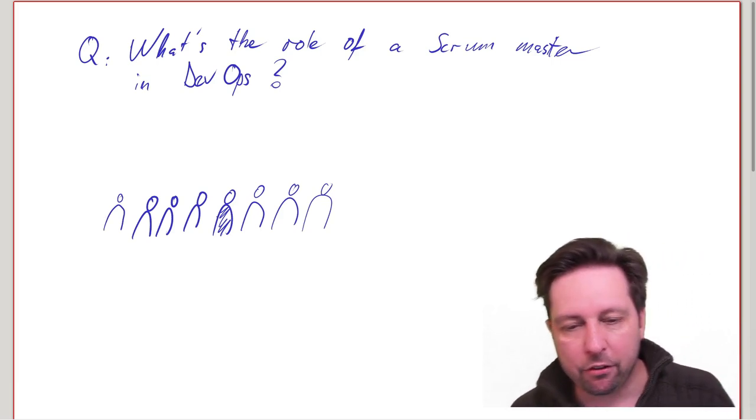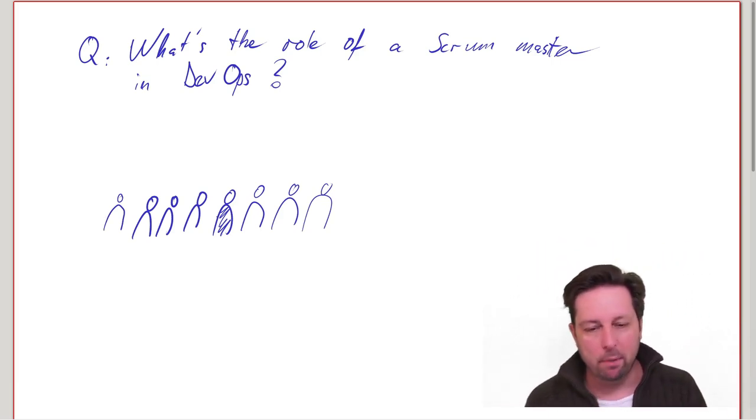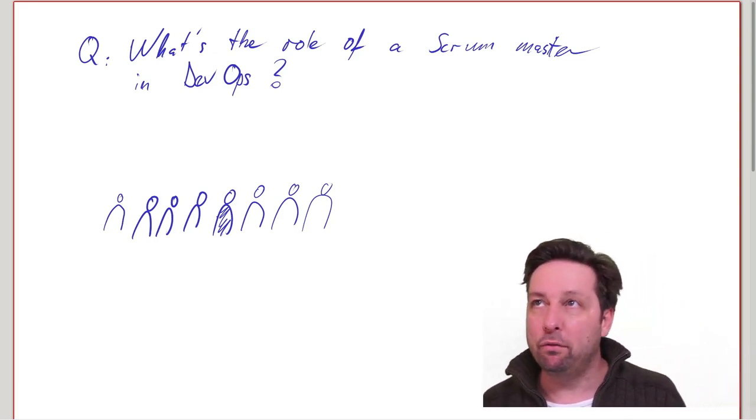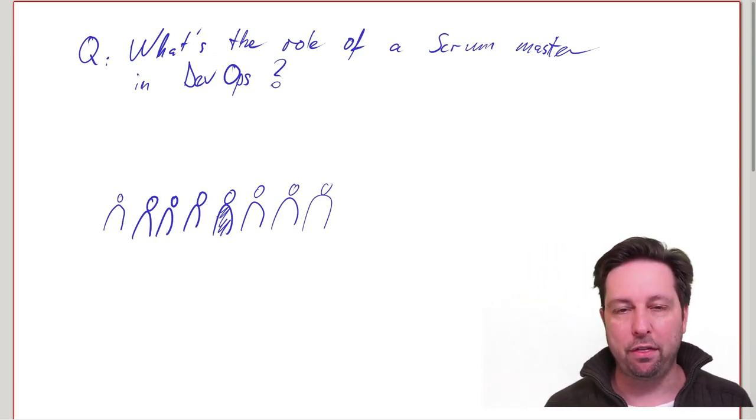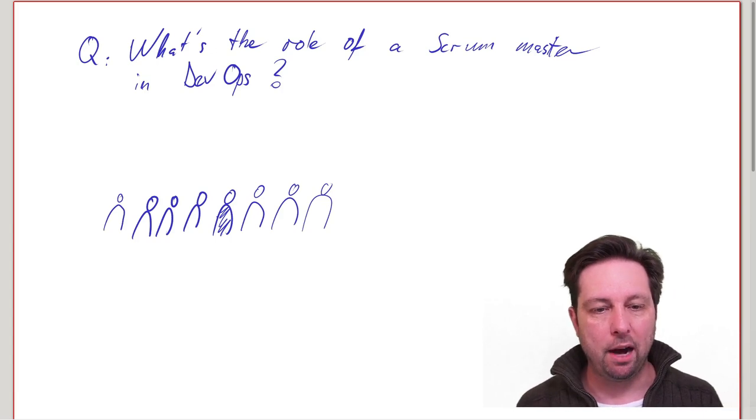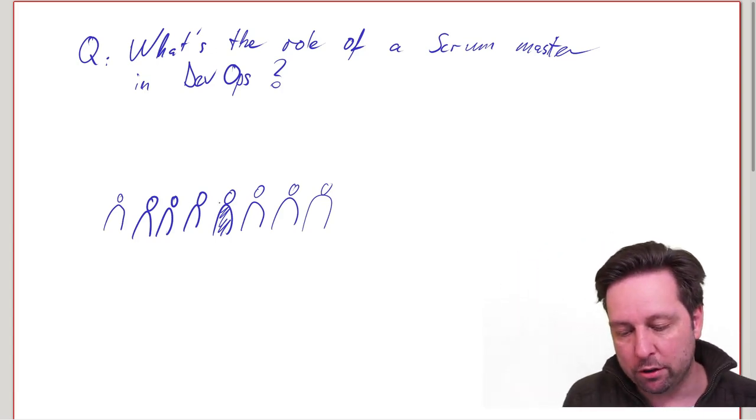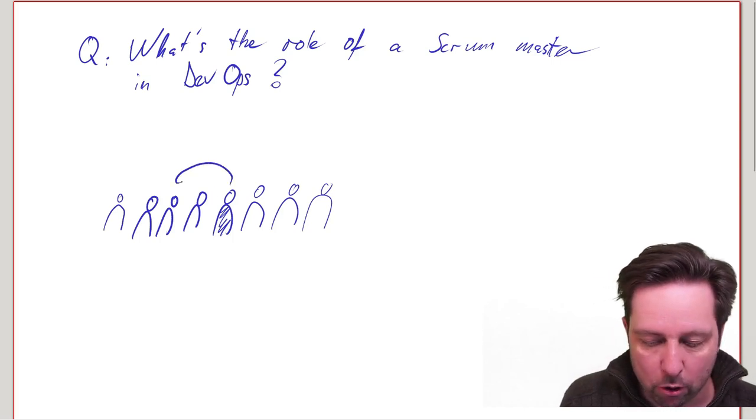So in a sense, the Scrum Master has always been the guardian also of feedback loops because, of course, a lot of the things that are part of Scrum are feedback loops. But now we've got more feedback loops. They used to be, quote unquote, tiny.